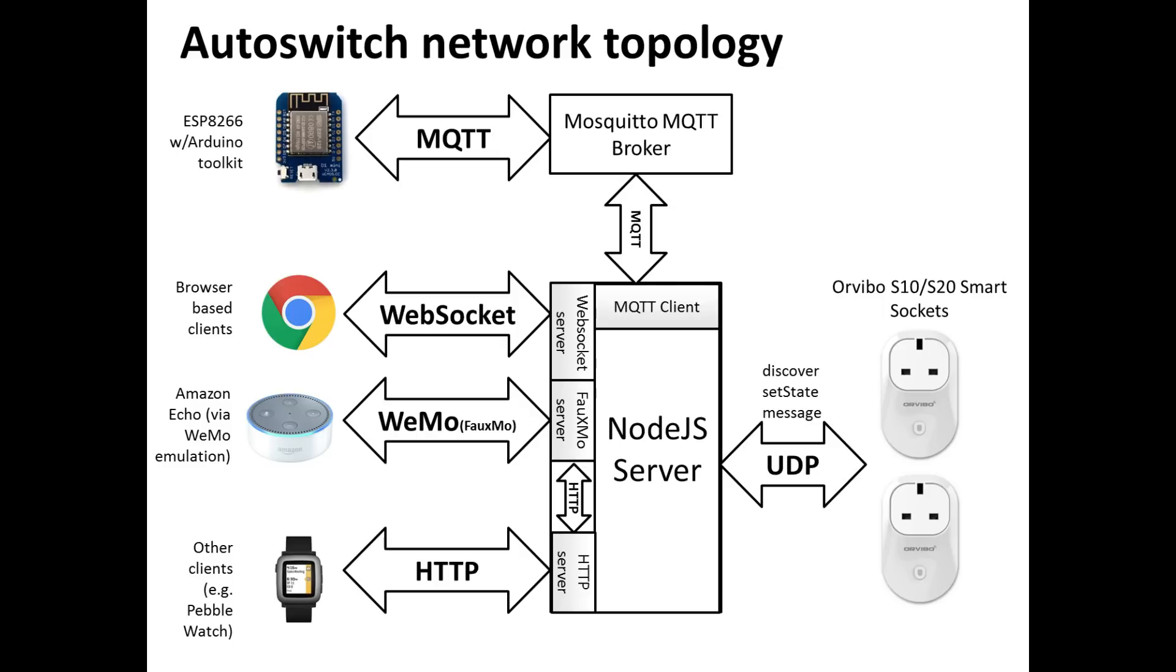Moving down from there, the Node.js server also provides a WebSocket server. This WebSocket server is used to power the mobile client. You can see in real time earlier that the switch is turned on and off on the mobile client in real time. And WebSockets enable you to do that because it's a real time protocol.